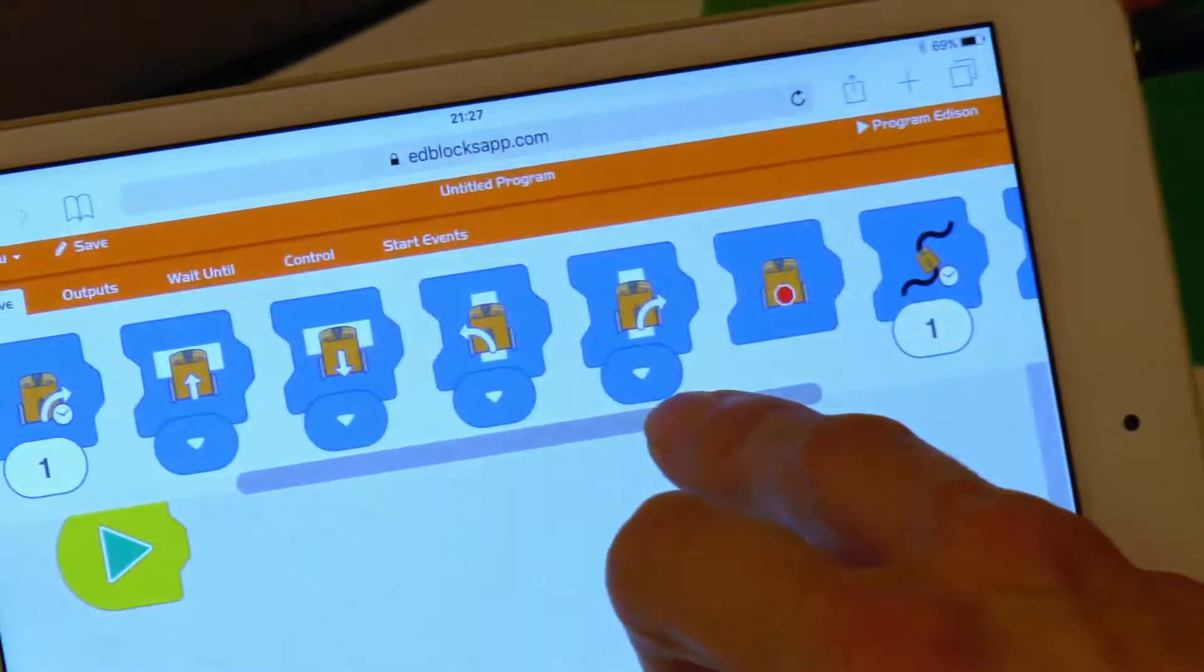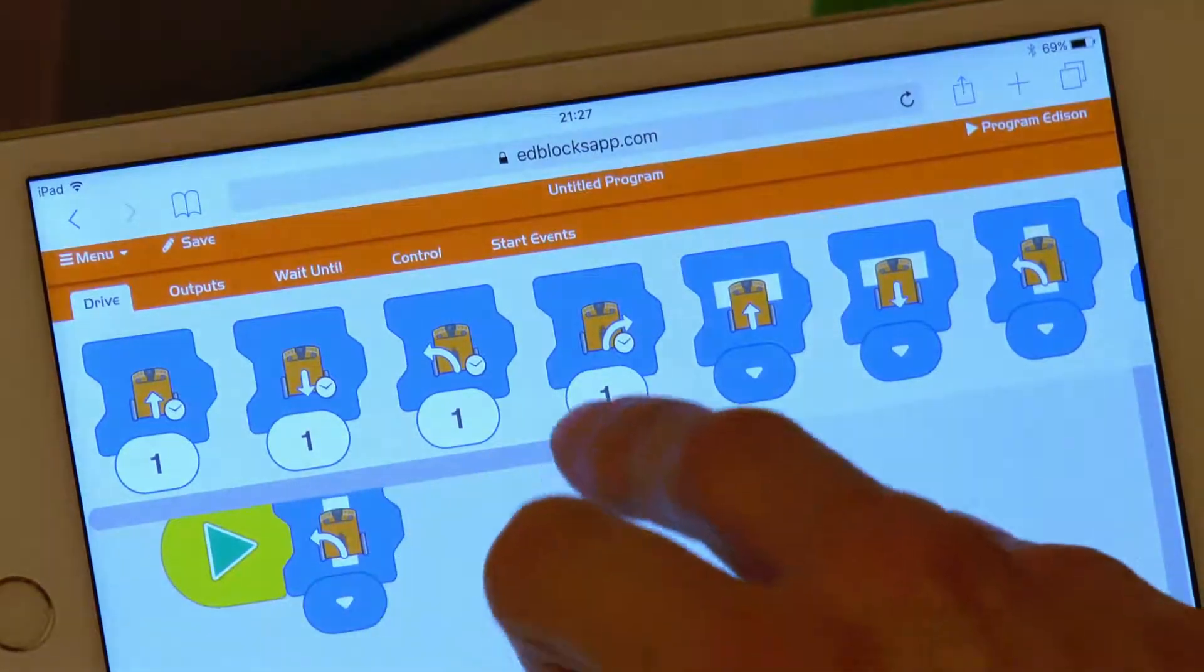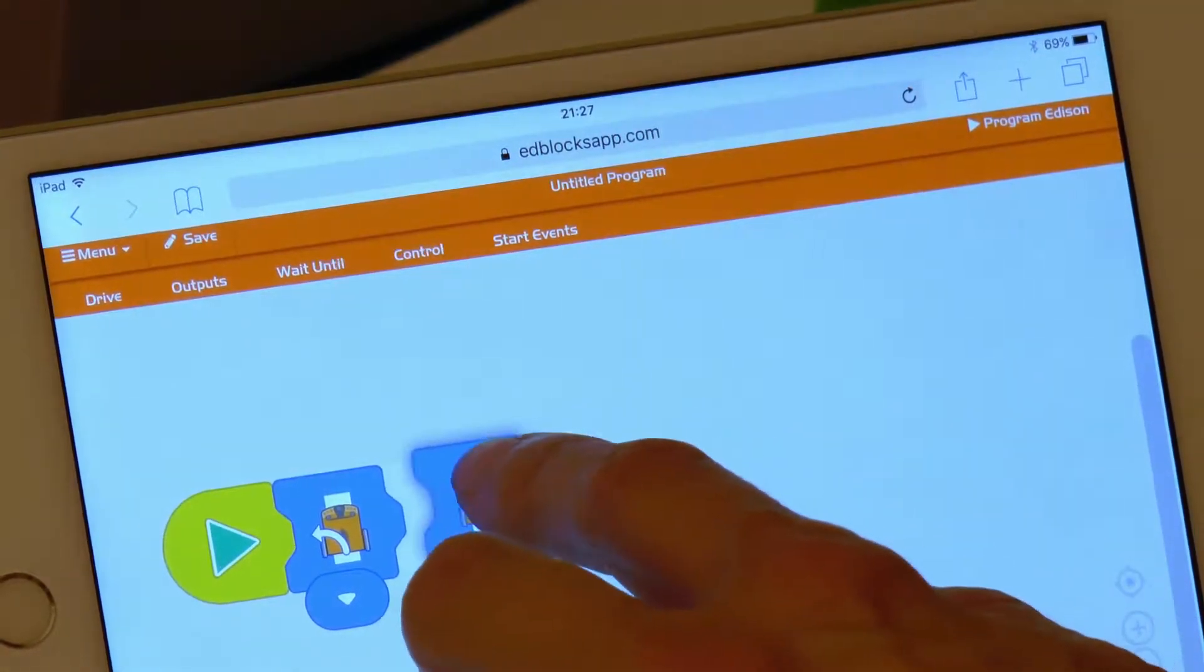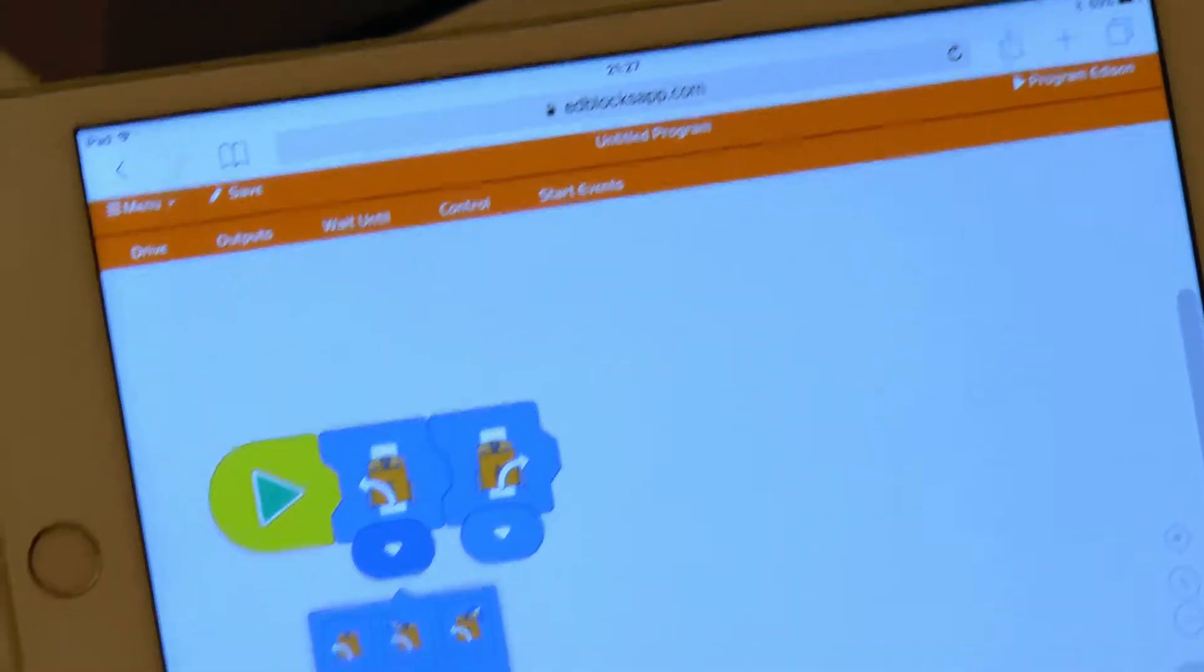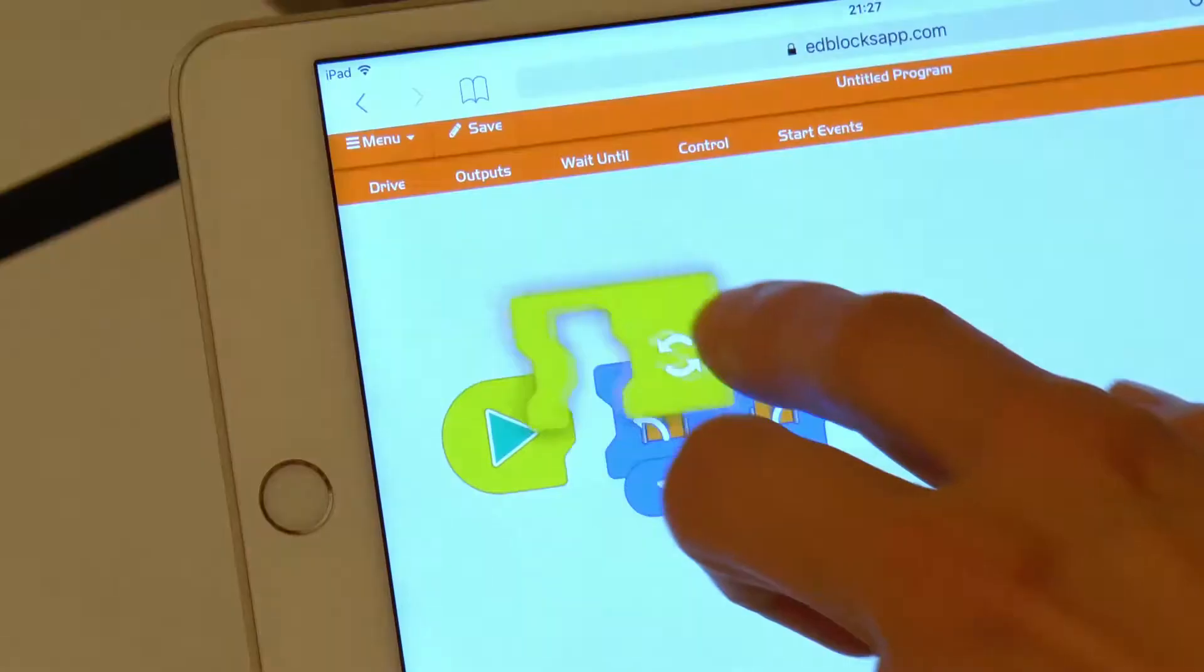Let's go to edbloxapp.com and open the menu section Drive, where we will find the two blocks for turning left and turning right indefinitely. Let's configure them so that Edison would turn to the opposite direction of light direction. Over both of their blocks, we shall place a loop.